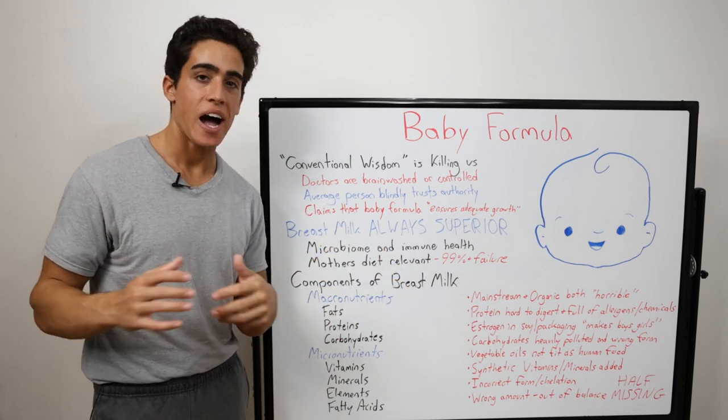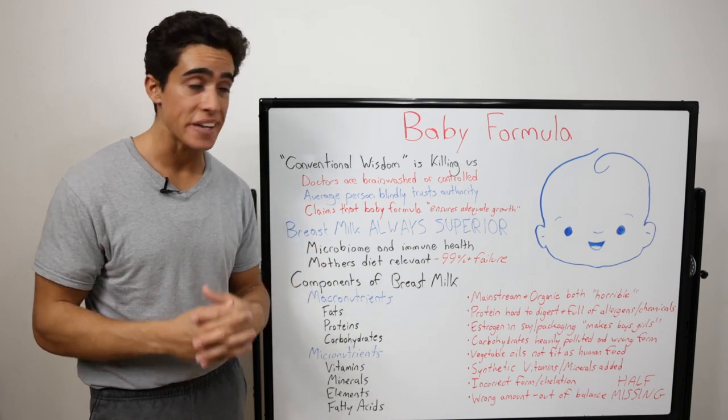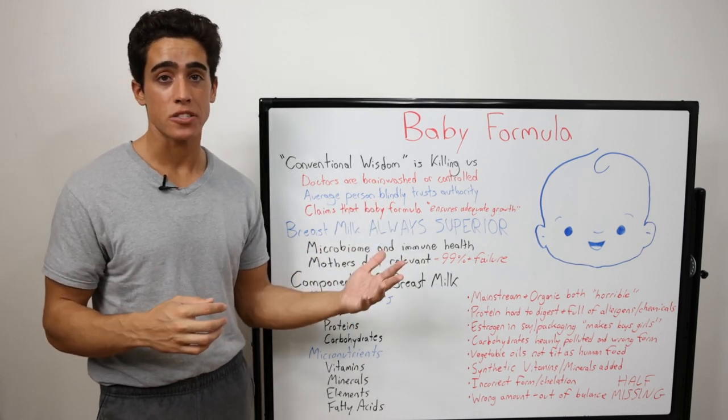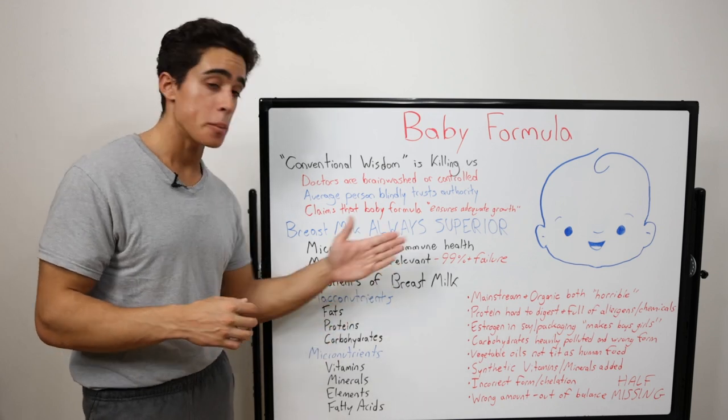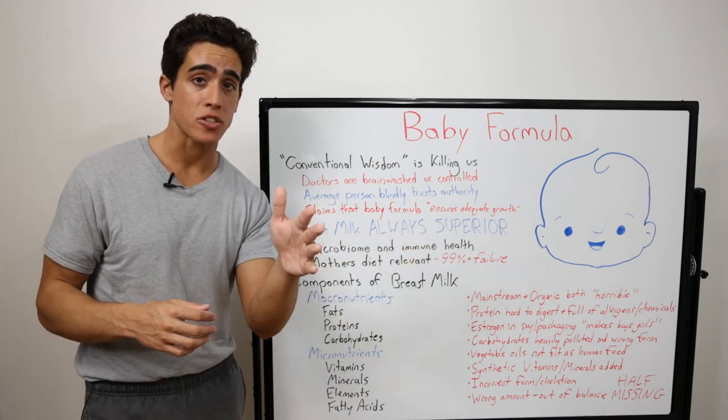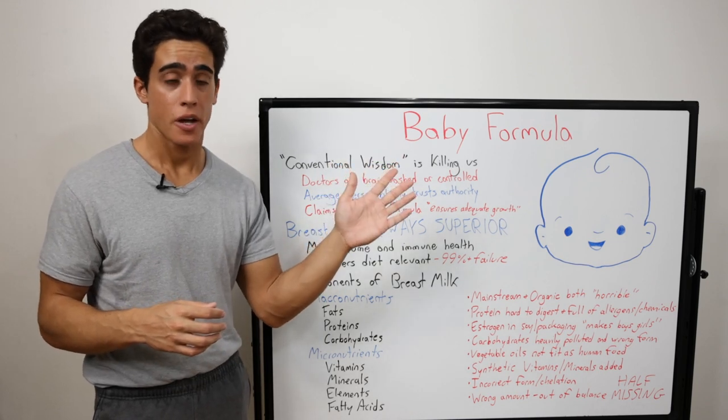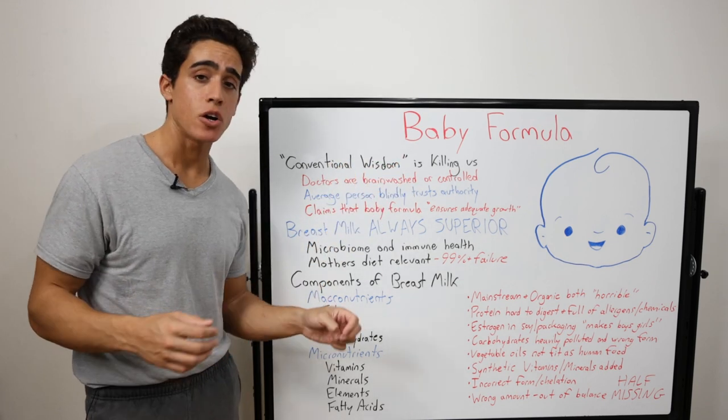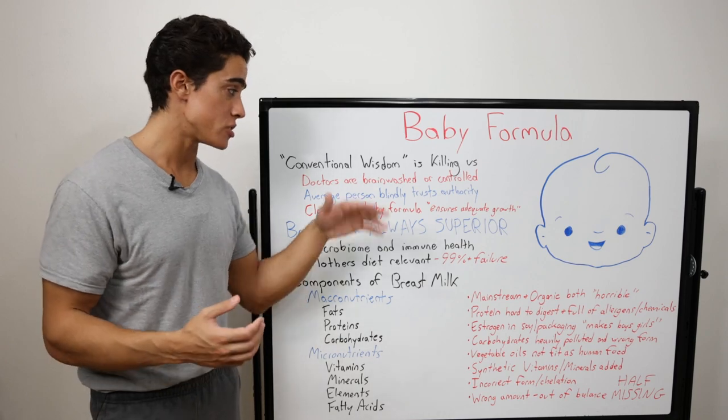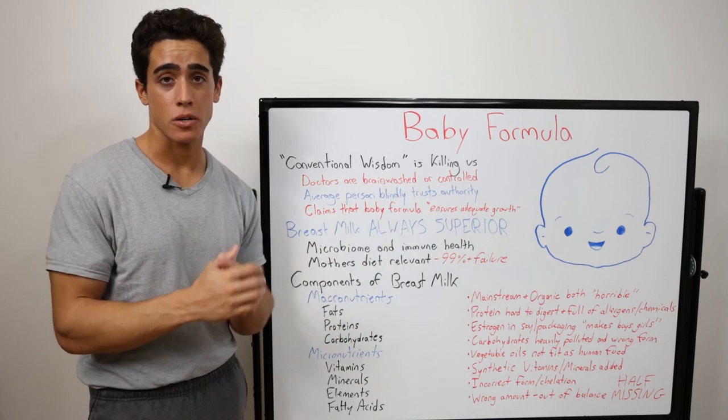High omega-6 oxidative damage to all cells in the body is the opposite of what a healthy growing baby needs. You can't even make a comparison between vegetable seed oils and the fat structure of human breast milk. Not to mention the oxidized omega-3s they're adding to this formula to replicate the omega-3s in breast milk.